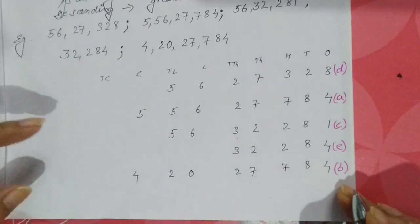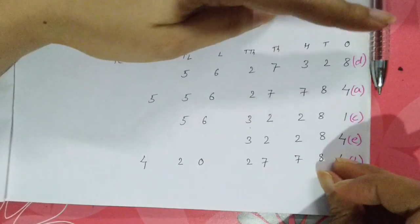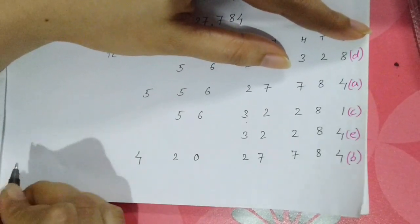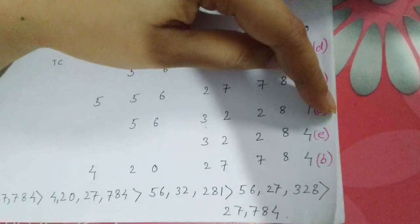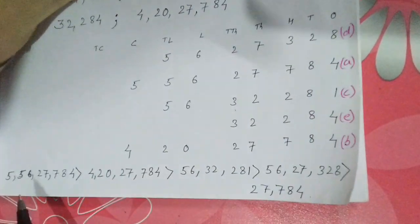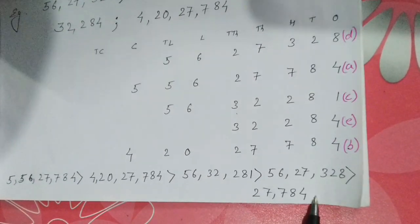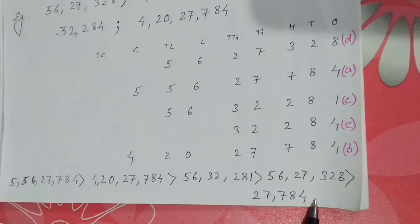After ranking the numbers A through E, write them all in a line with greater-than signs between them. This gives the final answer in descending order. So students, that was all about your first chapter — Large Numbers. I hope you all have understood. If you still have any doubts, we can always discuss. Thank you, have a nice day.